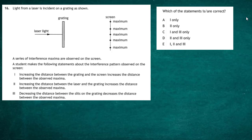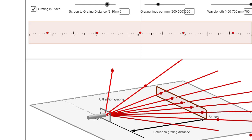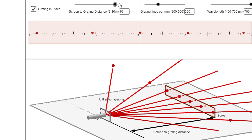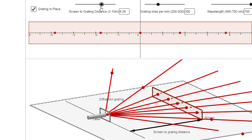To help with this question, let's go to a simulation to answer the first statement: increasing the distance between the grating and the screen increases the distance between the observed maxima. Here we have the laser, the diffraction grating, and the screen. The red lines show how light is diffracted through the grating. If we increase the distance between the screen and the grating, you can see that the distance between the maxima is definitely increasing.